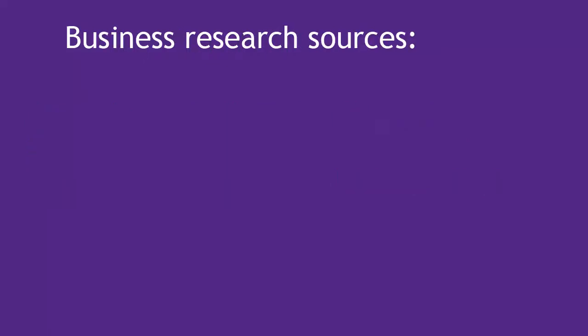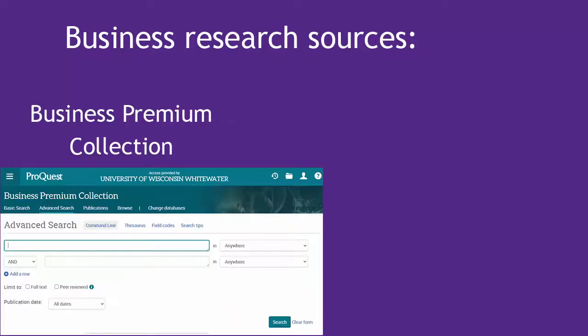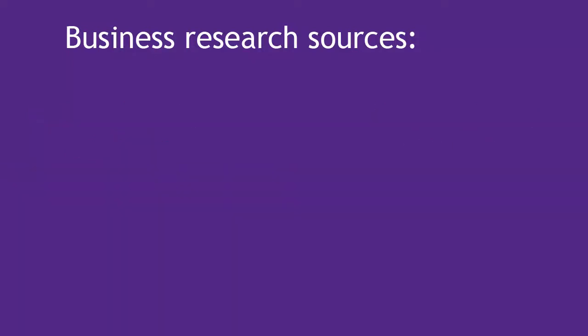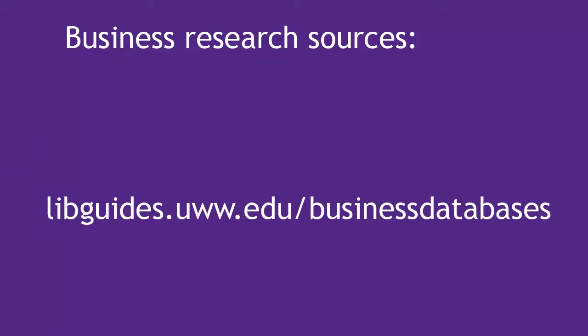You already likely know that information on the internet is more likely to be biased for a variety of reasons, so let's spend your research time finding higher quality content from one of our library subscription databases for business — either Business Premium Collection or Business Source Complete. You should be able to access both of these databases from off-campus by going to libguides.uww.edu/businessdatabases.